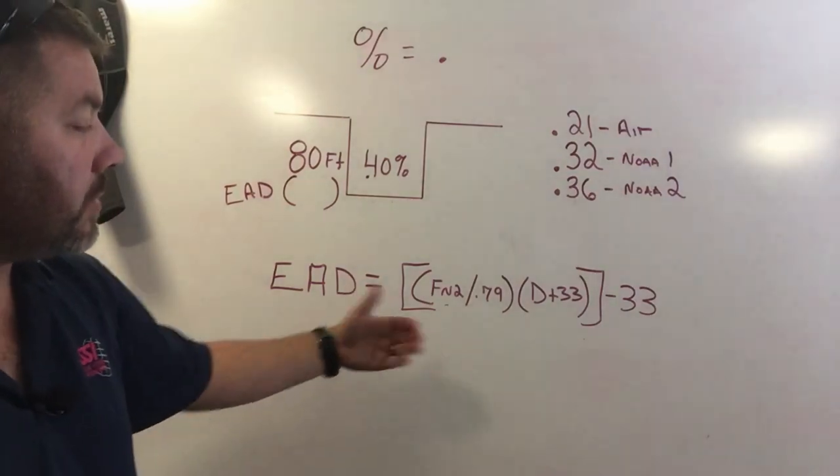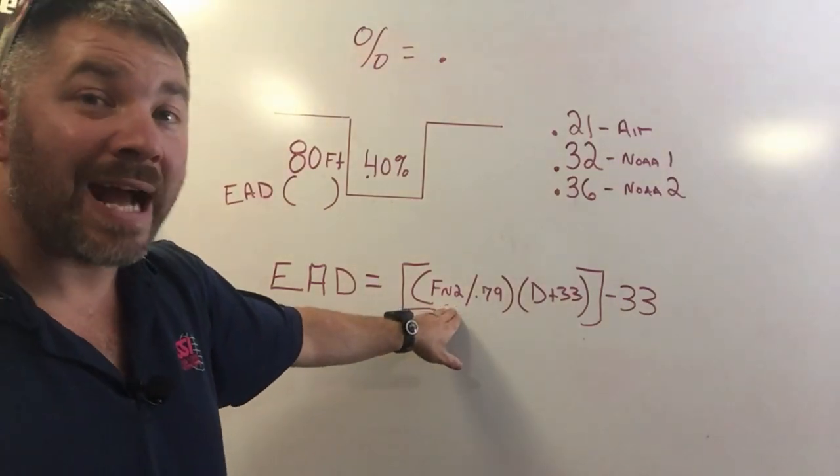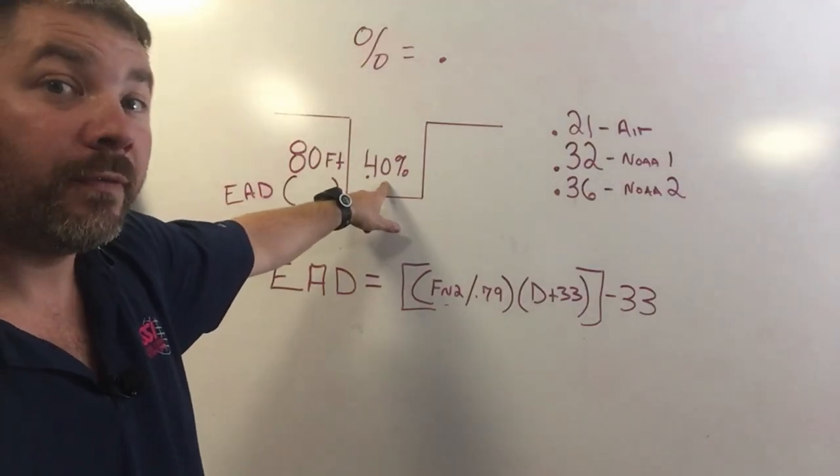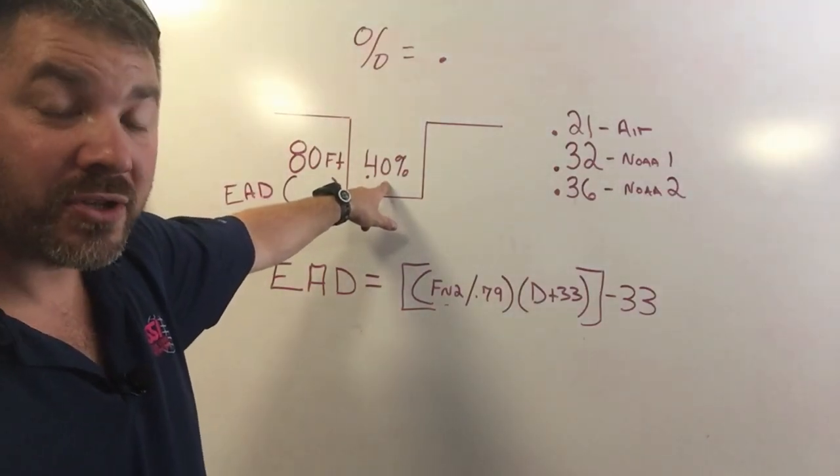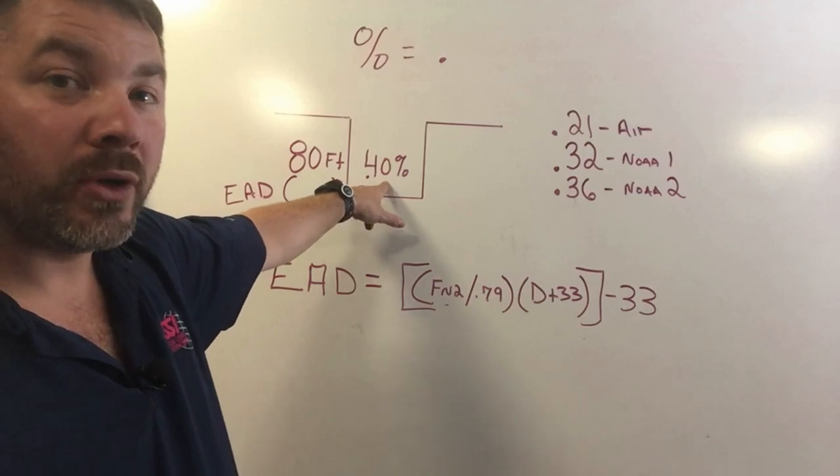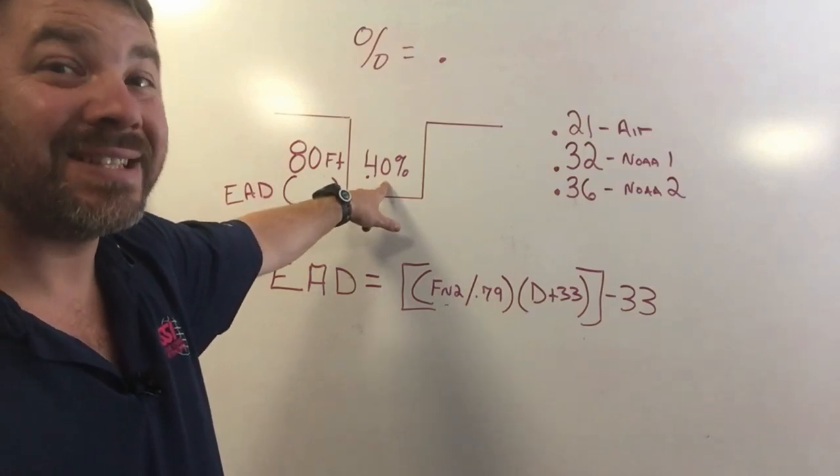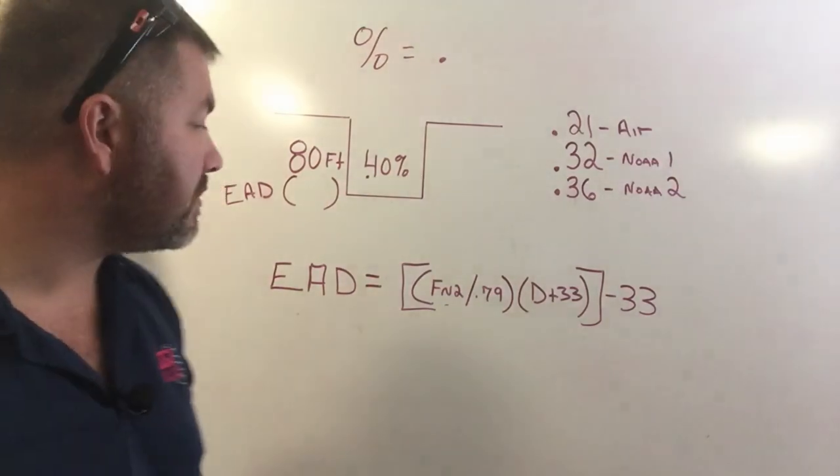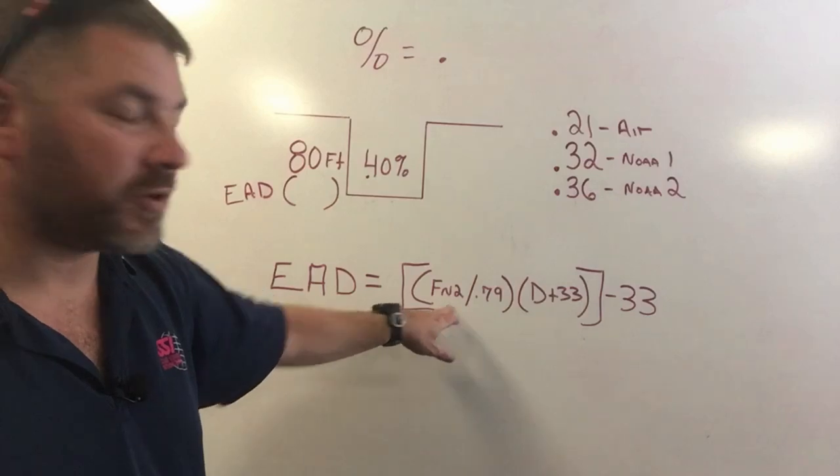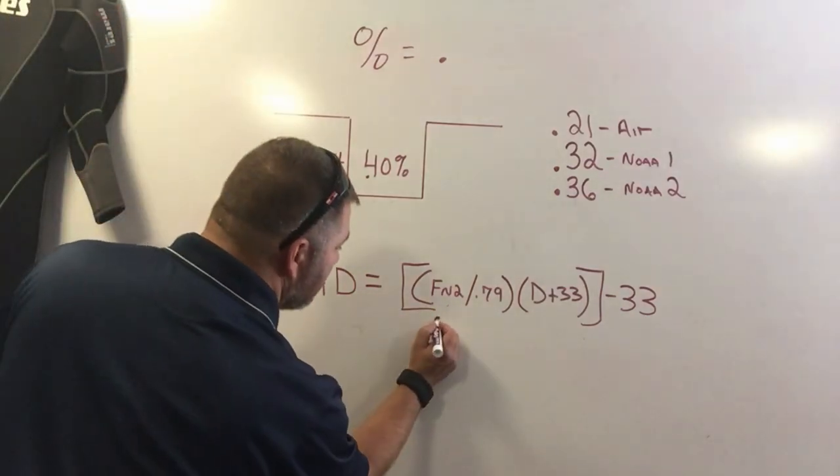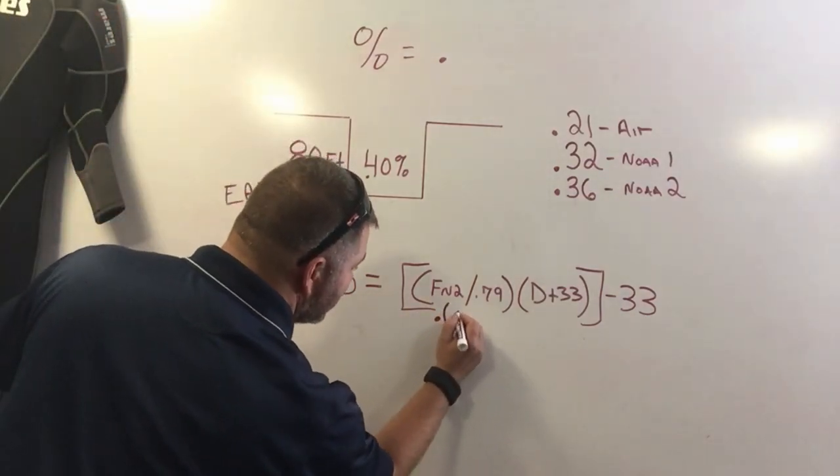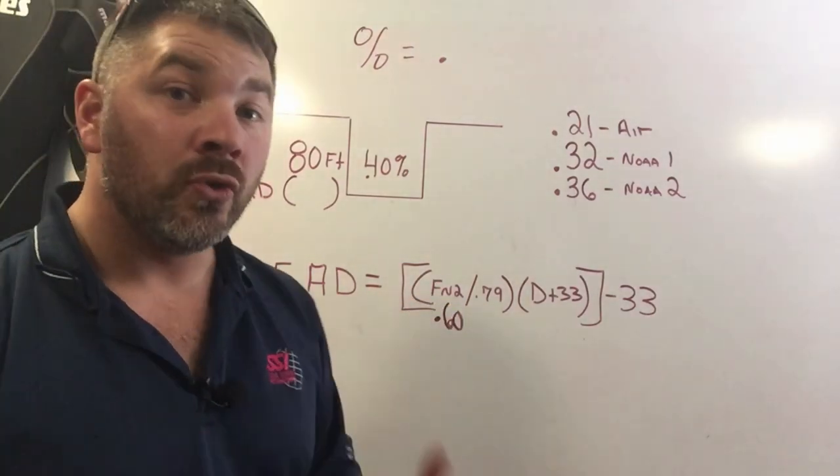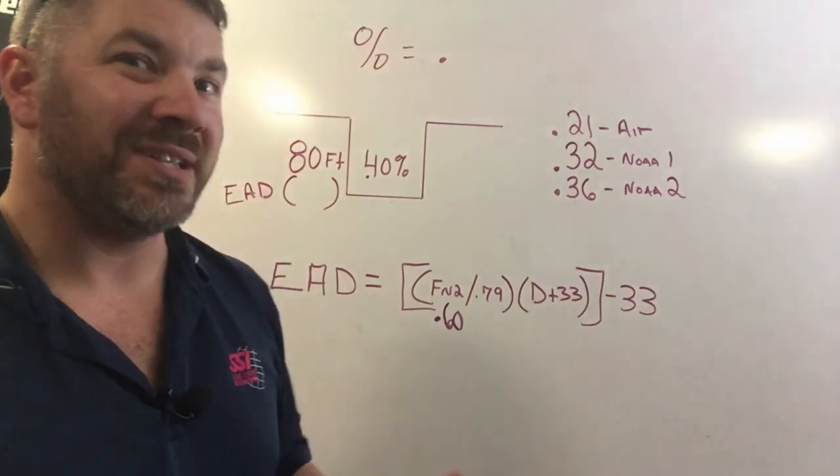The equivalent air depth goes as follows: we simply take the fraction of nitrogen or the partial pressure of nitrogen within the gas that we're breathing. So if it's 40% oxygen, I know it has to equal up to 100%, so 100 minus 40 will simply be 60%. And remember when I said percentage I also mean decimal. So if my fraction of nitrogen is 60%, what I'm really saying is 0.60.